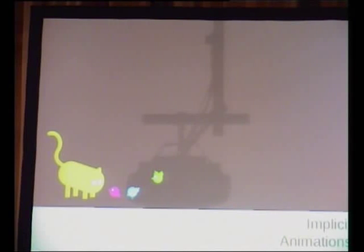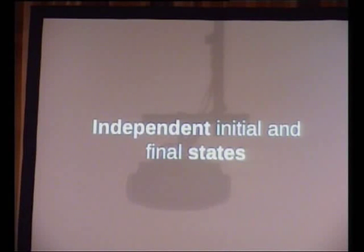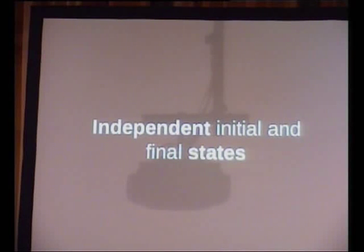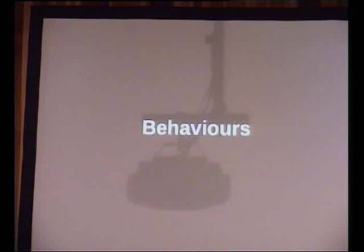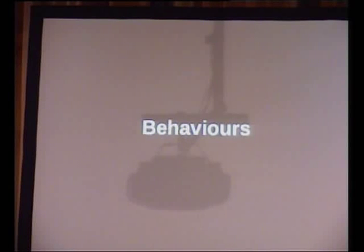Second lightning talk: the implicit animations API that landed in Clutter 1.0 and is being expanded in 1.2 and further on. Clutter began with an animation API around 0.2, but it was not a very good implicit animations API — it depended on you setting up the initial and final state, and both could be completely independent from one another. It was called 'behaviors' with a U in the API. It's so much fun to have half the API in en-US and the other half in en-UK. We're getting a lot of flack for that.